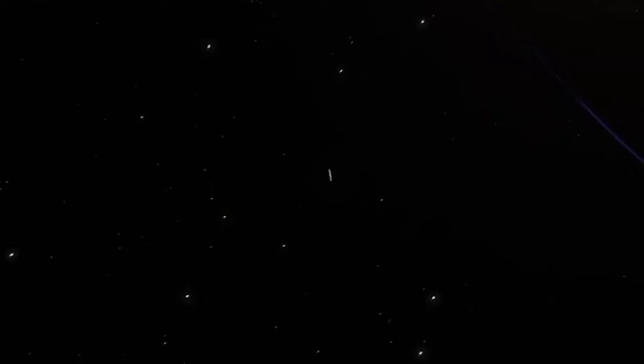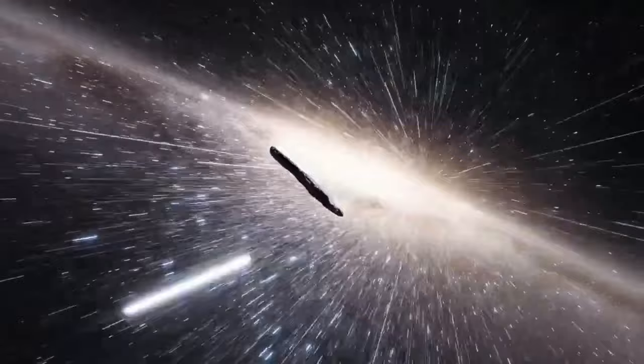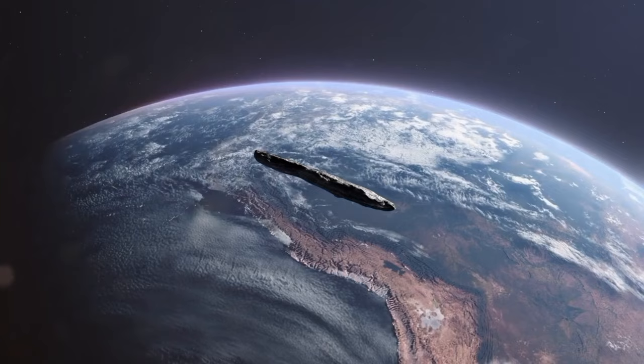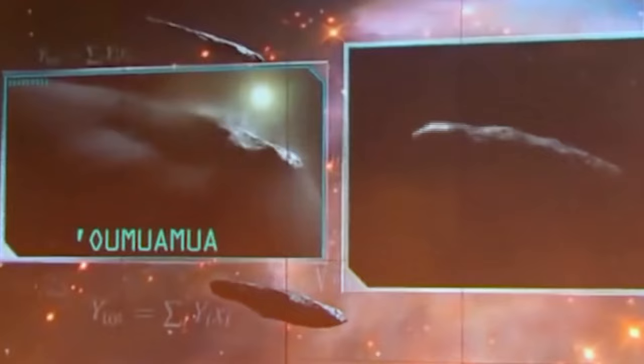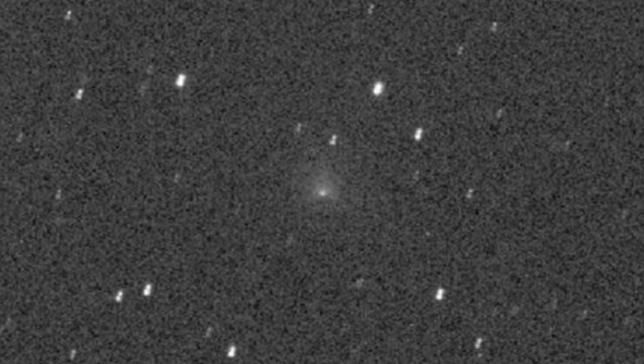When its interstellar origin was confirmed, it was designated 1I2017U1, marking it as the first member of a new class of objects. The absence of a coma suggests that Oumuamua has minimal surface ice, with any volatiles likely lying beneath a thick crust. This indicates that it either formed within the frost line of its parent stellar system, or spent enough time in the inner region for surface ice to sublimate, similar to damocloids. Determining which scenario is more likely is challenging due to the chaotic nature of small body dynamics, although its spectrum suggests the latter scenario.